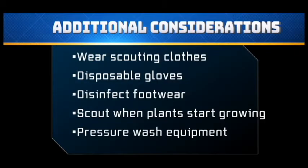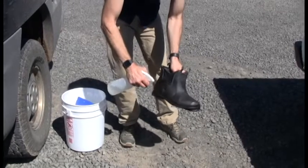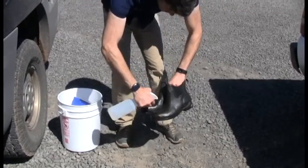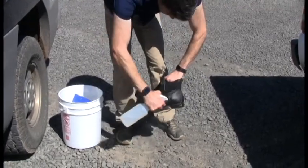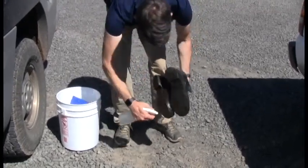Consider an extra set of scouting clothes — something lightweight that you can throw in the laundry at the end of the day. Wear disposable gloves so if you come into contact with boxwood blight you can take them off and throw them away. Disinfect your footwear — I recommend something waterproof with minimal tread that is easy to clean. Make sure to clean off any mud and debris before sanitizing with isopropanol or another disinfectant of your choice.